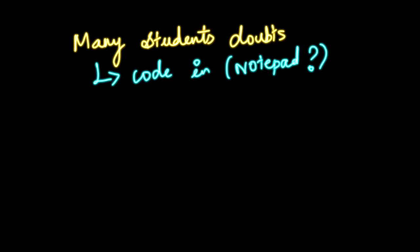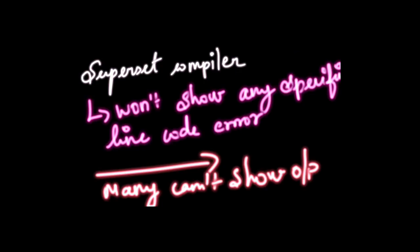One drawback of the compiler is that if you make a mistake in a specific line, the compiler won't show a specific error. For example, if you miss a semicolon in line 123, it will not display output and will not show error messages. The solution is to practice your code thoroughly and analyze your own errors, since the Superset compiler won't help with that.